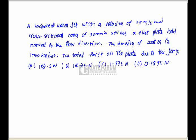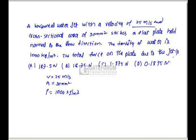First, let us look at the question. A horizontal water jet with a velocity of 25 meters per second and cross-sectional area A of 30 millimeters squared strikes a flat plate held normal to the flow direction. The density of water rho is given as 1000 kg per cubic meter. We have to find out the total force on the plate due to the jet.